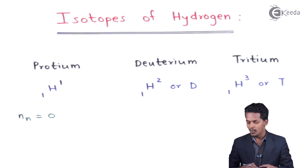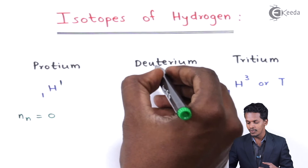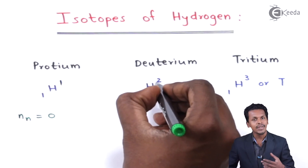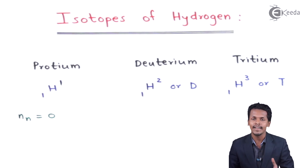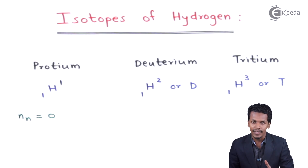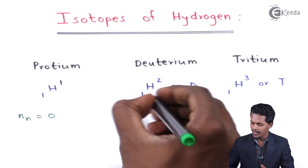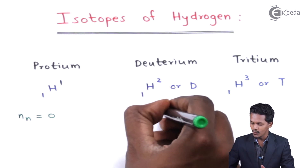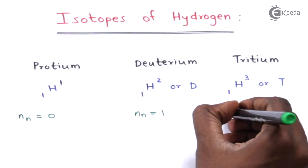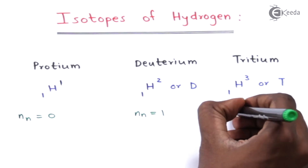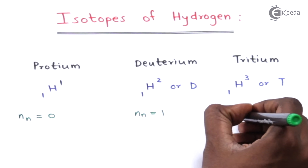For deuterium, the atomic mass number is 2, indicating one proton and one neutron — so the number of neutrons is one. For tritium, the total number of neutrons is two, giving an atomic mass number of 3.